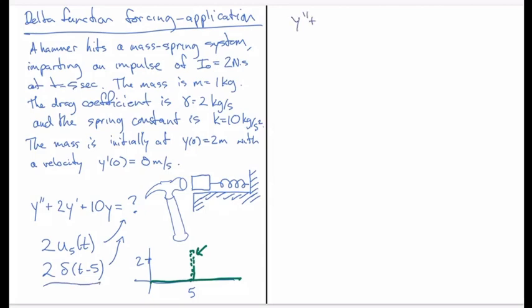So we have y double prime plus 2y prime plus 10y equal 2 times delta of t minus 5. And now to solve this equation, we take Laplace transforms of both sides.